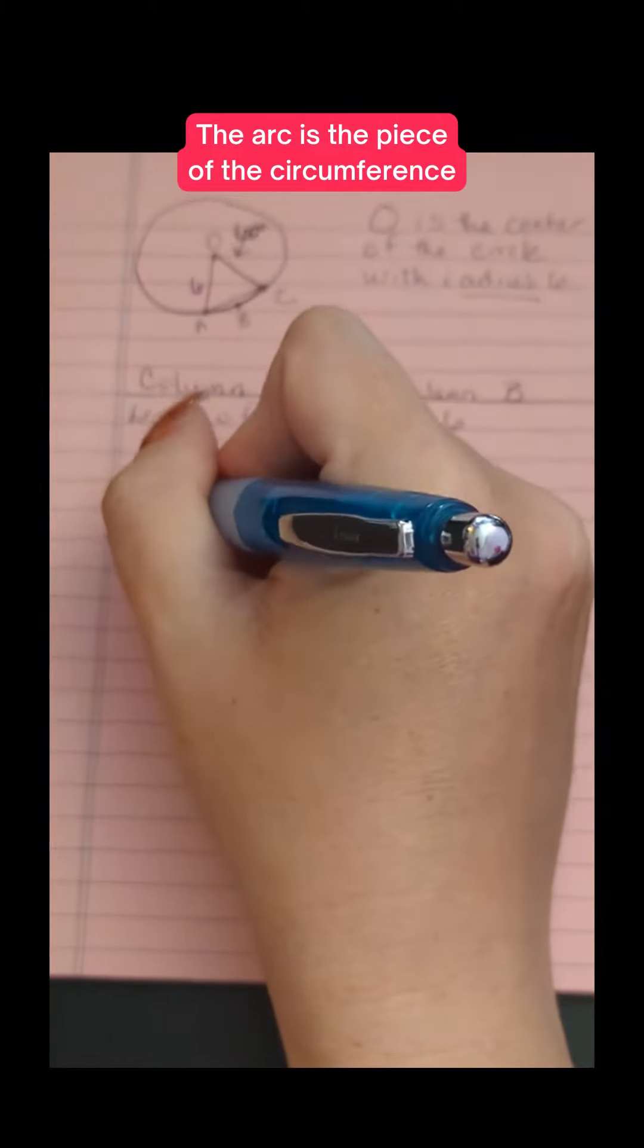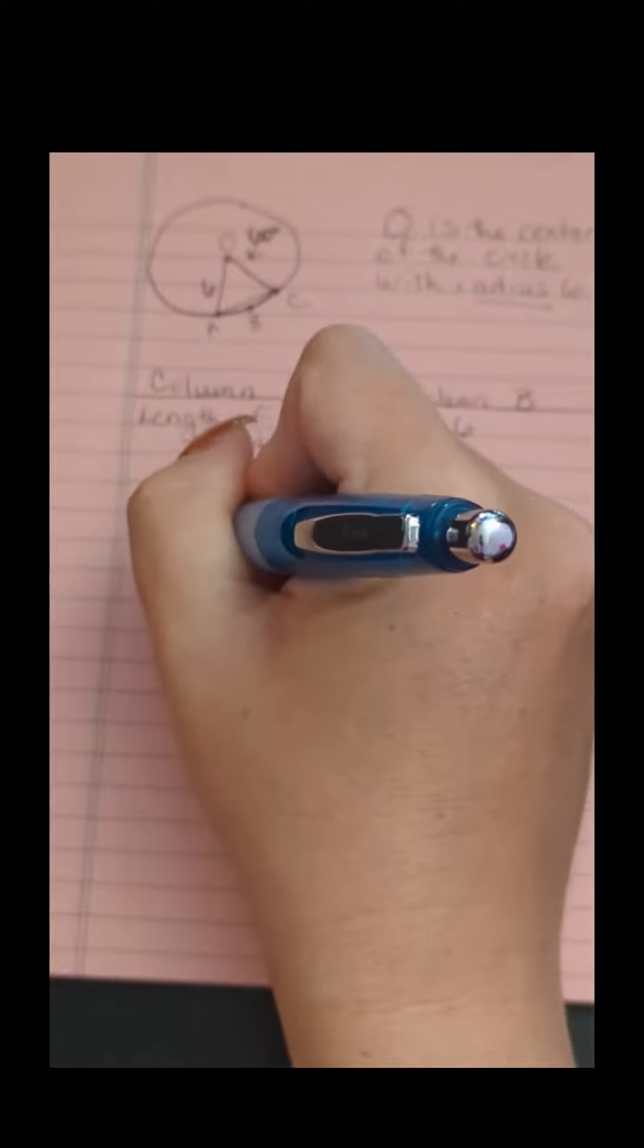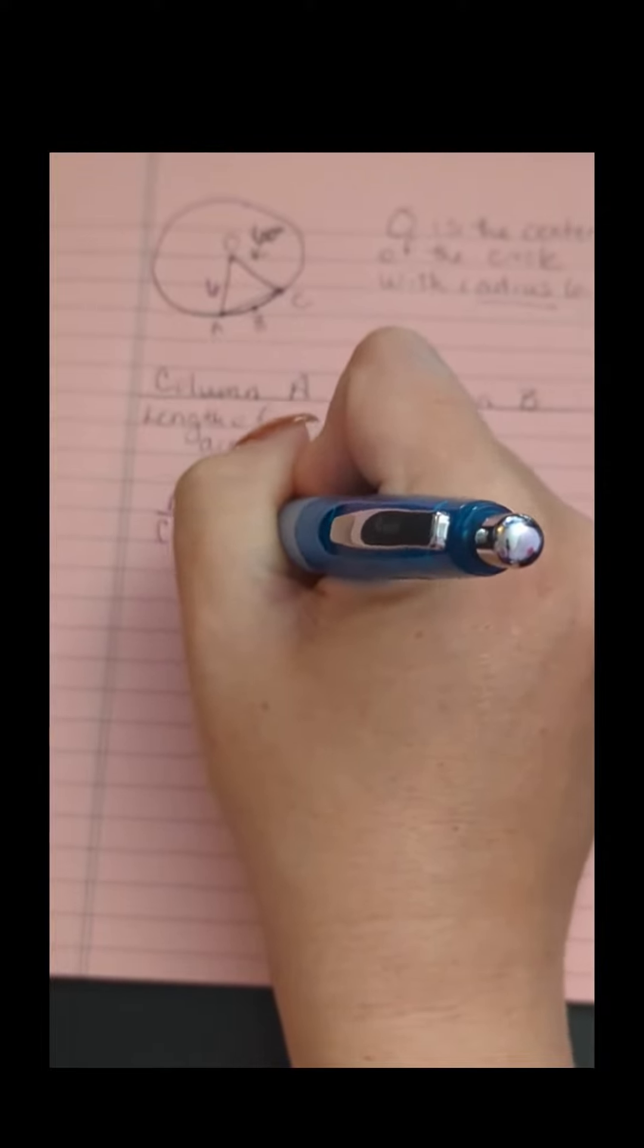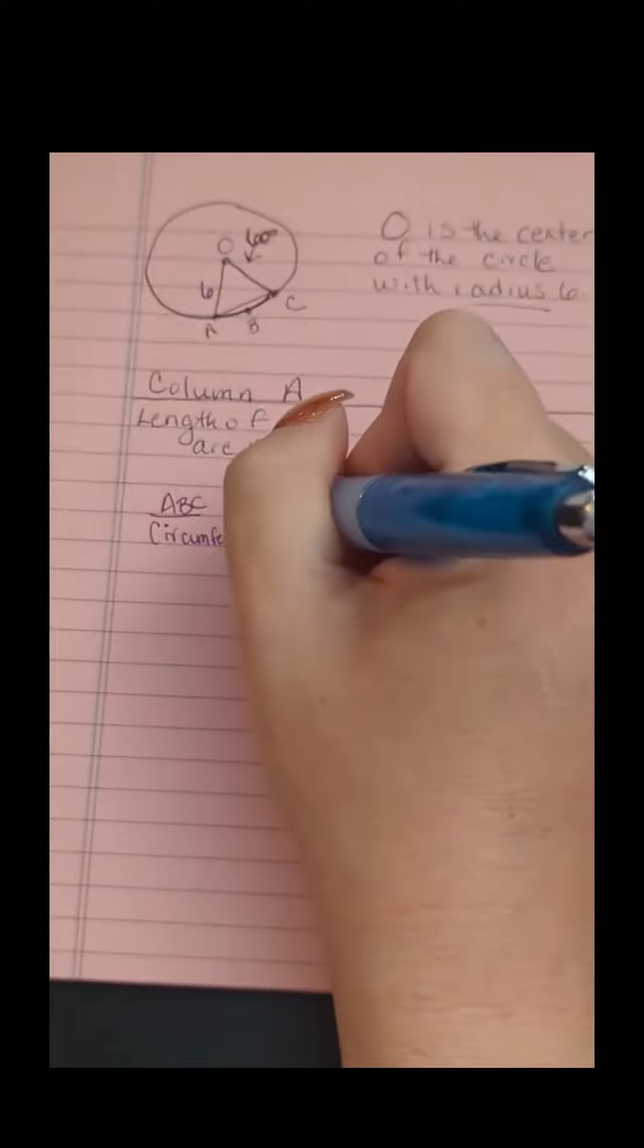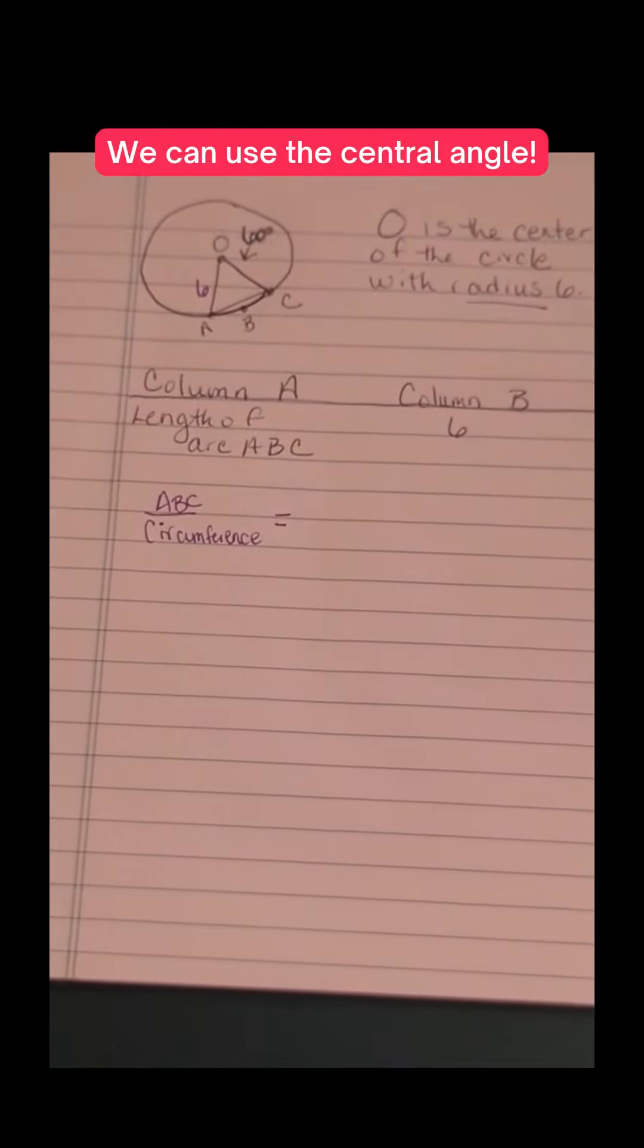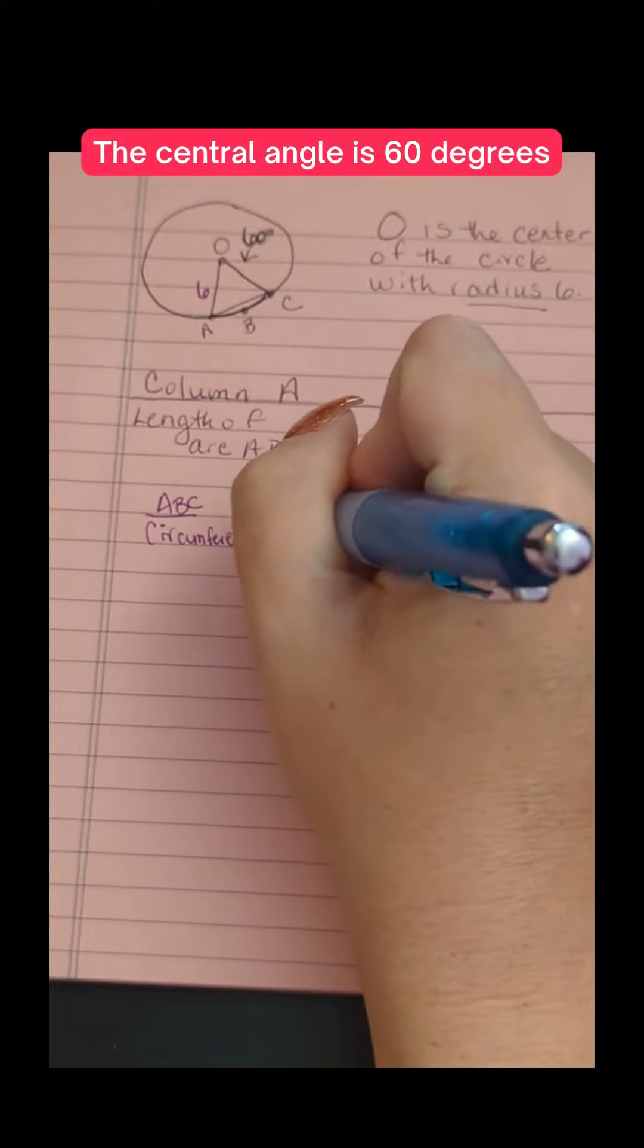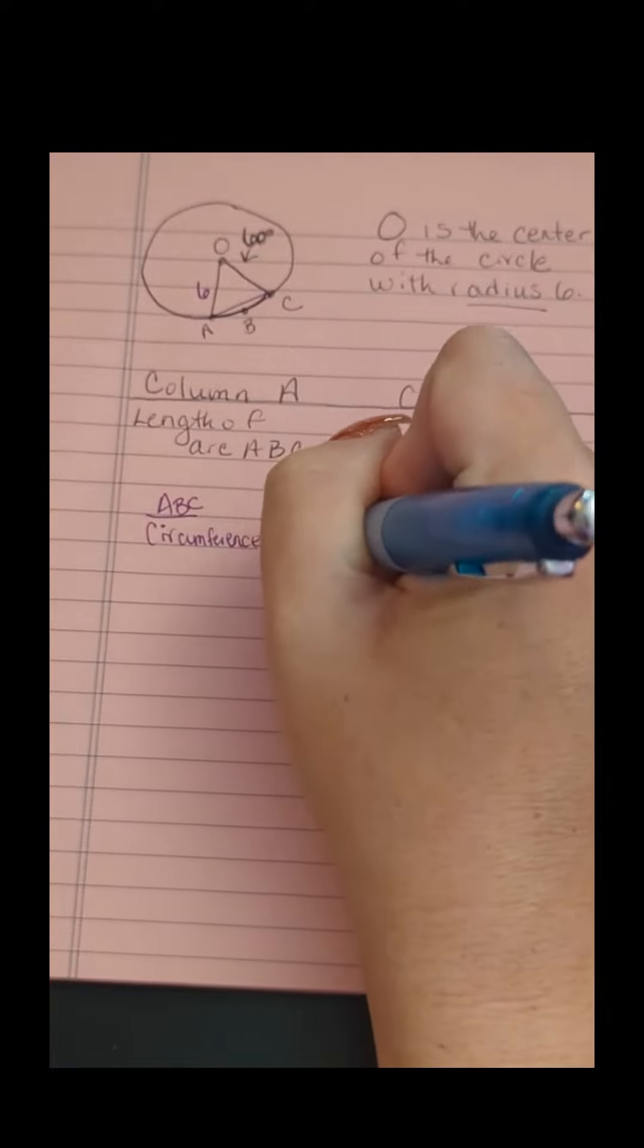Arc ABC is a piece of the circumference. How much of the circumference is it? We can find out using the central angle. The central angle is 60 degrees, and that's a portion of the 360 total degrees in the circle.